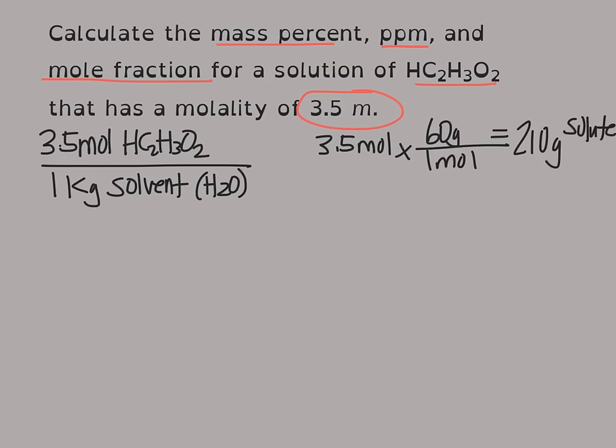I also have one kilogram of solvent, which is 1000 grams, and my solvent is water. I'm going to convert that into moles using the molar mass of water, and that would get me 55.56 moles of water. Now I can work through the process.